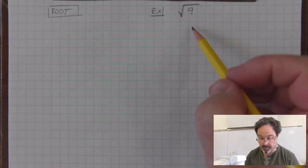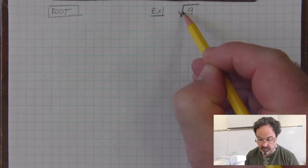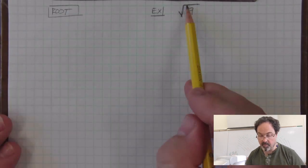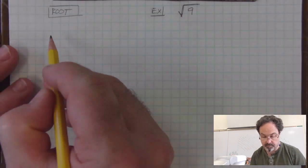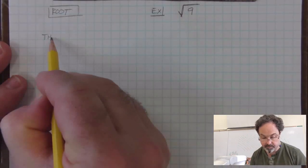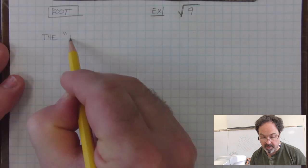This is not a division bar. It has an angle here and a bar that goes over a number or an expression. This symbol has a name - it's called the radical symbol.